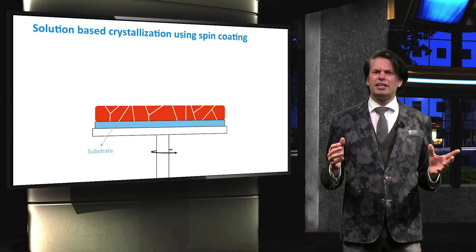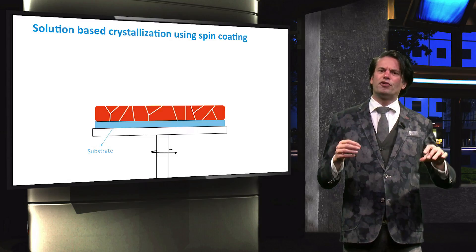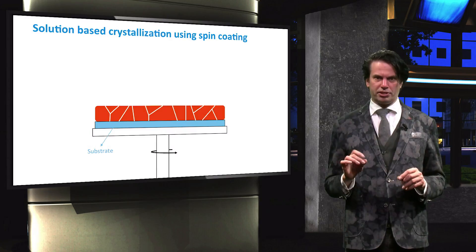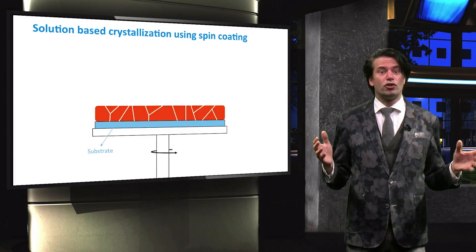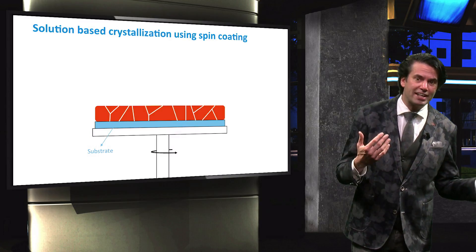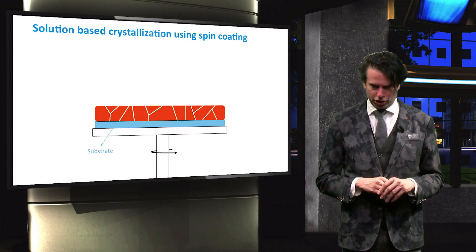The perovskite layer is a polycrystalline layer. This means that the layer consists of grains with different lattice orientations and grain boundaries. As grain boundaries are surface entities in the bulk that facilitate defects, they can enhance the recombination of light-excited charge carriers.